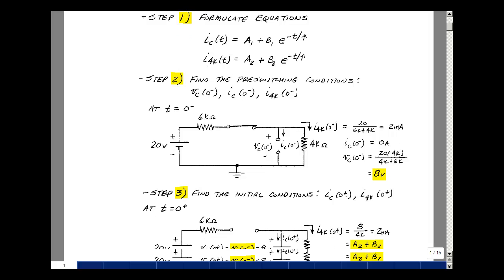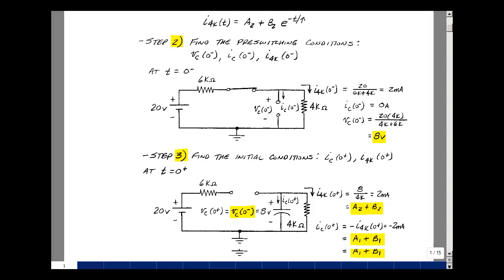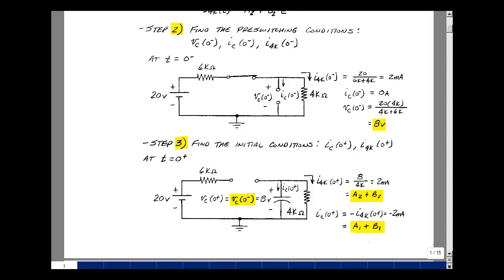Step three is to find the initial conditions of our variables. What's i sub c of t equals zero plus, and what's i of the 4k resistor? These variables can change instantaneously, but the one thing that can't is the voltage across the capacitor, because i is equal to C dV dT. So if the voltage jumps abruptly, we have to supply infinite current, and that's just not possible.